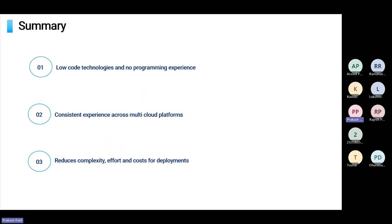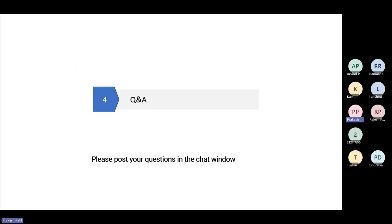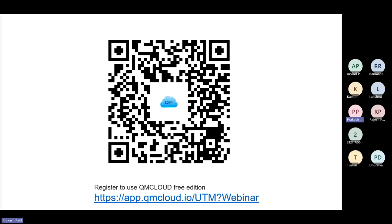In summary, we saw how low-code technologies in QM Cloud — canvas, drag-and-drop, and auto-connections — can be used with no programming experience to deploy cloud infrastructure. A key unique selling point is a consistent experience across multiple cloud platforms: AWS, Azure, Google, Kubernetes, and VMware or vSphere for private cloud. It reduces complexity, effort, and cost for deployment and accelerates your digitization journey. To try it: go to app.qmcloud.io and sign up for a free developer edition; single-user version is free, and the advanced edition with additional capabilities is a paid version.